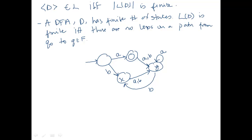It just can't have any loops on a path from Q0 to a final state — any final state. As soon as I add in, say, this transition, this machine now has an infinite language. It accepts A concatenated with C A-star. So this has an infinite language. We're looking for any loops on a path from the start state to any final state.